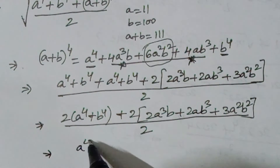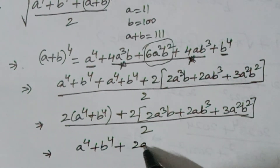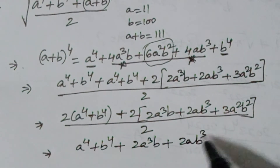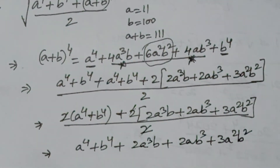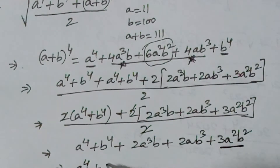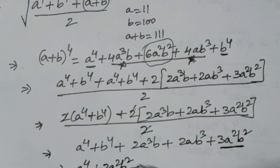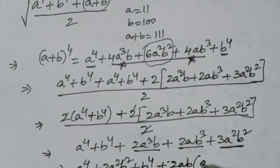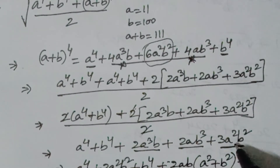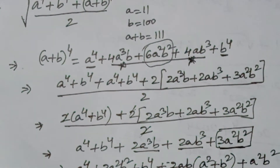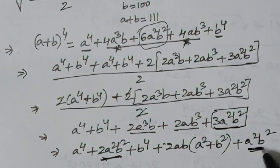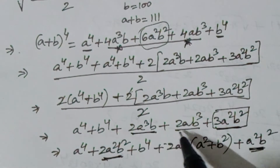So this can be written as a⁴ + b⁴, plus 2a³b + 2ab³, plus 3a²b². Now from the 3a²b² I am splitting it as 2a²b² and a²b². So we get: a⁴ + 2a²b² + b⁴, plus 2ab(a² + b²), plus a²b².